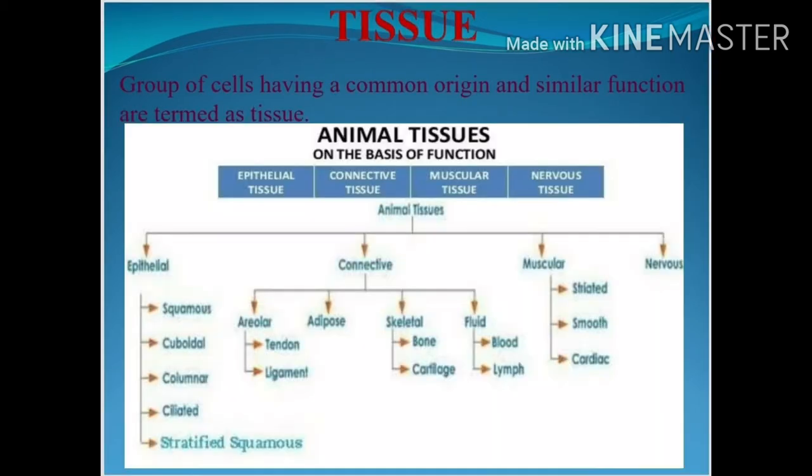Tissues are the group of cells having a common origin and a similar function. Here you can see the structural representation of the animal tissues on the basis of their function. Basically, animal tissues are of 4 types: epithelial, connective tissue, muscular tissue, and nervous tissue. And further they are classified based on their functions.